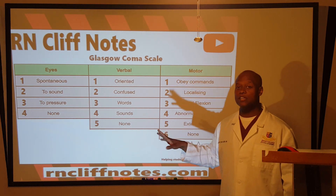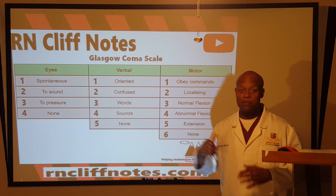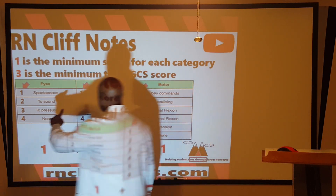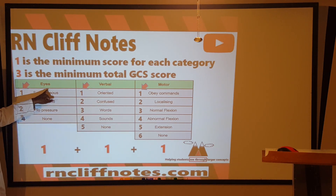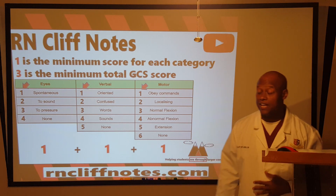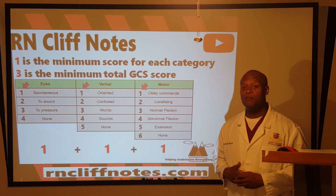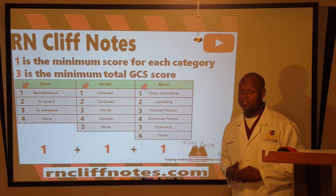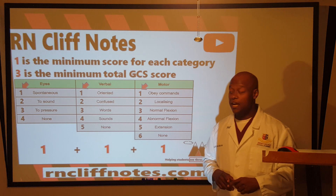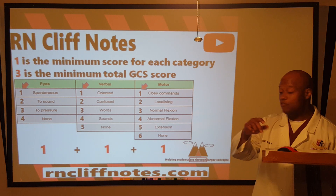The Glasgow Coma Scale looks at eye movement, verbal ability, and motor ability — three separate categories. It's important to know that there are three key categories that make up the GCS. In each category, each one starts at one, so there is no such thing as a score of zero for the GCS. Somebody can be seriously sick and practically dead and still wind up with a score of three. The minimum score is three — not good.